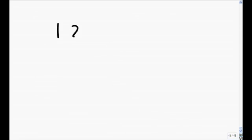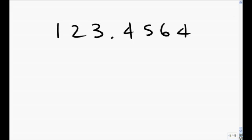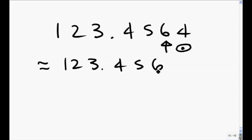Consider the number 123.4564. If we want to approximate this number to the nearest thousandths, we locate the digit to the right of the decimal that's in the thousandths position. The four is in the tenths, five is in the hundredths, and six is in the thousandths position. We look at the digit to the right. If that digit is a zero, one, two, three, or four — like in this example, it's a four — the approximation will be 123.456. We leave the digit in the thousandths position, the six, alone. This number is approximated to the nearest thousandths.